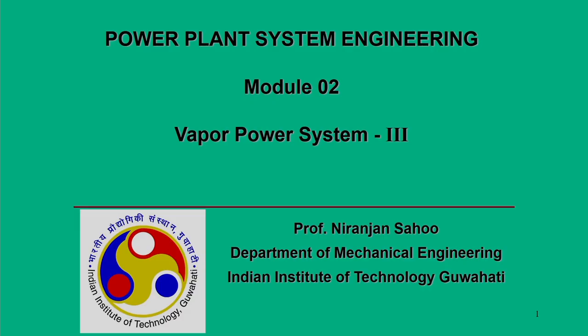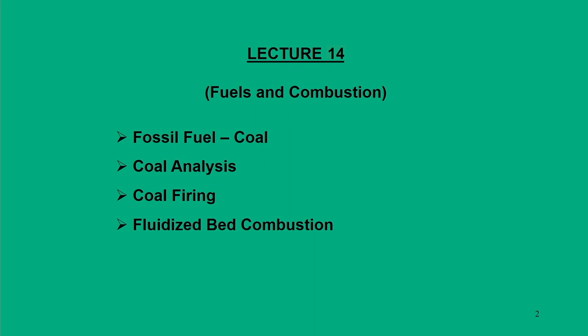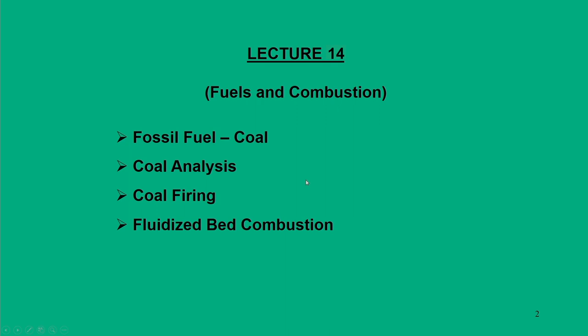Dear Learners, greetings from IIT Guwahati. We are in the MOOCs course Power Plant System Engineering, Module 2 Vapor Power System Part 3. In this lecture we will start a new segment: fuels and combustions. In a steam power plant, fuel is the main source of energy, and the type of fuel mainly used here is fossil fuel, that is coal. We will see the different varieties of coal, their grades, coal analysis, methods of coal firing, and the best method — fluidized bed combustion.